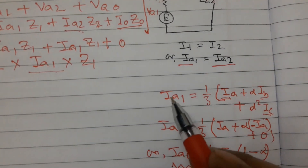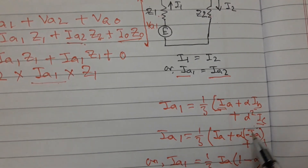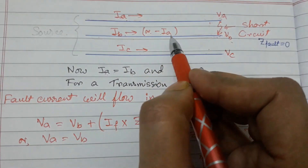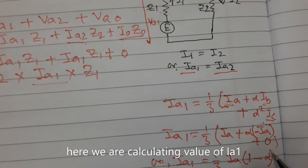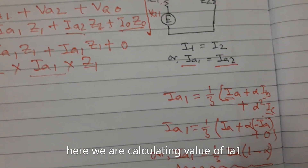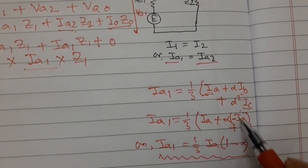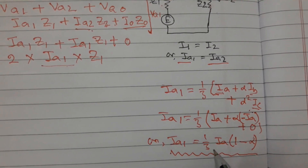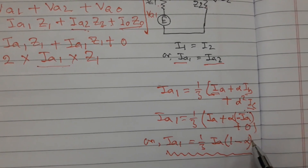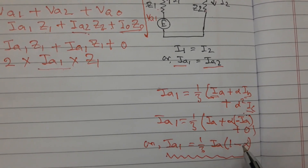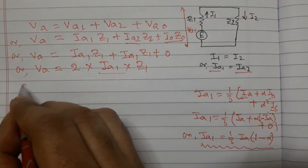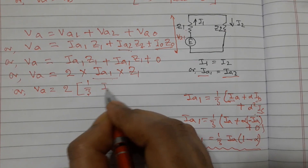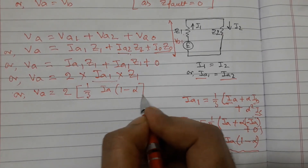We can write Ia1 using the sequence network formula. In this case, since the two currents Ia and Ib are equal in magnitude but opposite in direction, Ib equals minus Ia, and Ic equals zero. So we can write Ia1 equals one-third of Ia times (1 minus alpha), where alpha is the alpha operator of the sequence network. Therefore Va equals 2 times (1/3)·Ia·(1 minus alpha)·Z1.